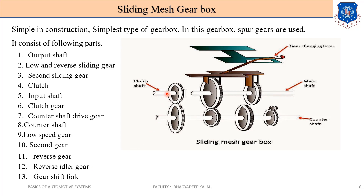Let me explain the working of this gearbox. When power is transmitted from the clutch shaft through the clutch gear to the lay shaft, all gears on the lay shaft rotate at the same speed. When we apply first gear, the selector moves this gear into contact with the corresponding lay shaft gear. In first gear, torque is maximum and speed is less because the gear on the lay shaft is small compared to the main shaft gear, which is a big gear.